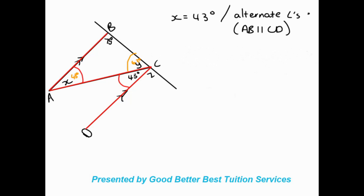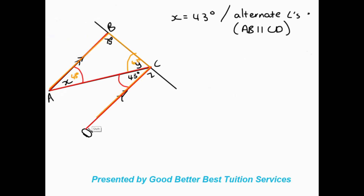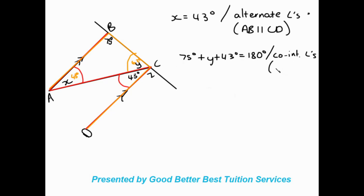The other way we could do this is to see that we also have a U shape here. So with the U and the parallel lines, we can say 75 degrees plus y plus 43 degrees is equal to 180 degrees. There are three different angles because this one side of the U is made of both the 43 degrees and the y angle. The rule is co-interior angles, and because they rely on parallel lines, we say AB is parallel to CD. Making y the subject gives us 62 degrees once again.